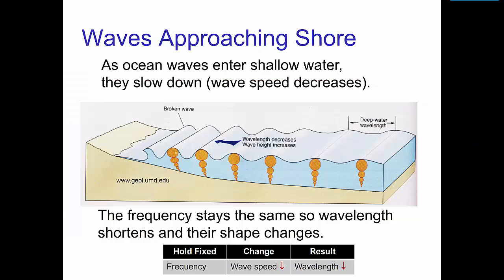Here is one last example. As ocean waves enter shallow water, they slow down. That is, the wave speed decreases. The frequency stays the same, so as the waves slow down, the wavelength shortens. When the waves get very close to shore, they become so short that their shape distorts and the wave breaks.